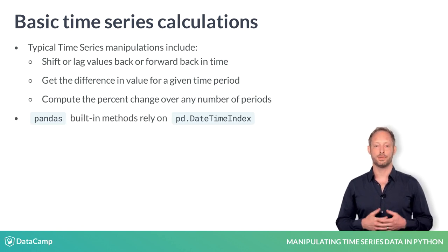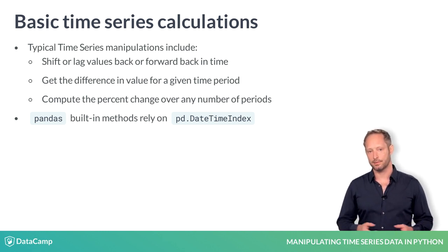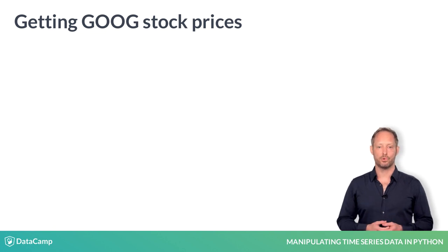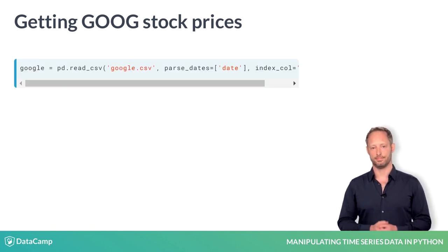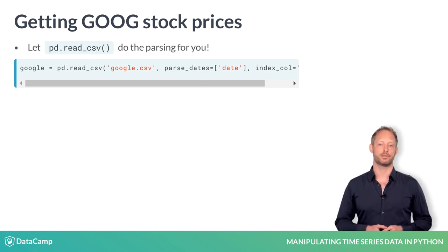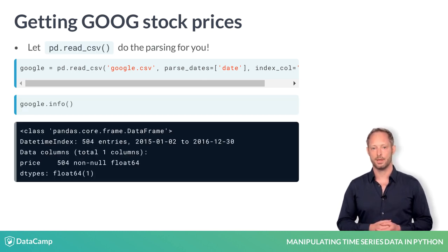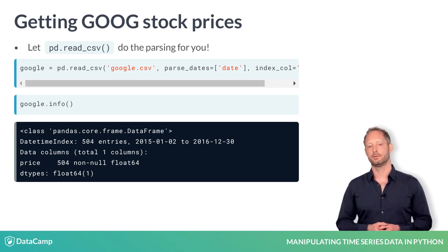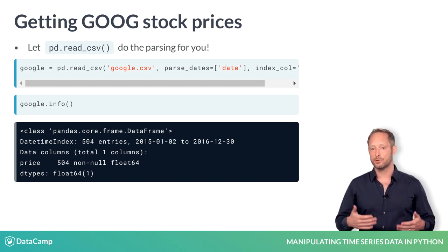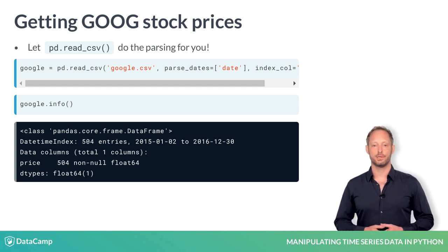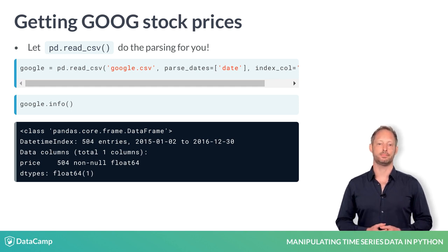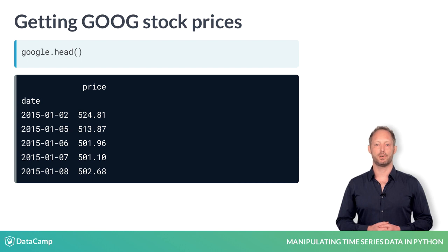Pandas has built-in methods for these calculations that leverage the datetime index you learned about in the last segment. Let's import a recent stock price time series for Google. You can let the read_csv function do the date parsing for you. Instead of using the toDateTime function, you can tell read_csv to parse certain columns as dates by providing one or more target labels as a list. You can also let read_csv set a column as index by providing the index_col parameter. As a result you get a properly formatted time series.